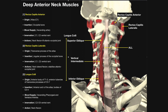The action of rectus capitis anterior is neck flexion and stabilization of the atlanto-occipital joint. When both rectus capitis anterior muscles contract in unison, they pull the occiput down toward the atlas, producing neck flexion. These muscles will be synergistic with the sternocleidomastoid, which is in the superficial region. They are not the major neck flexors, but they do contribute.